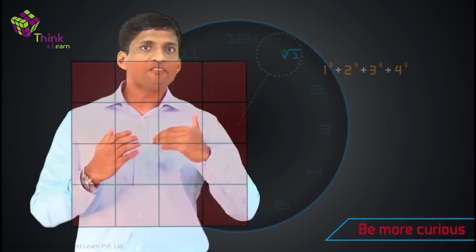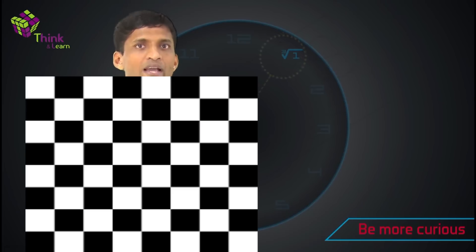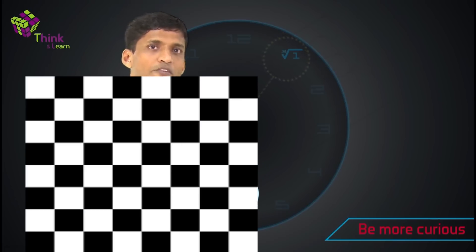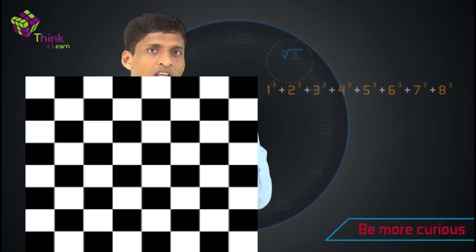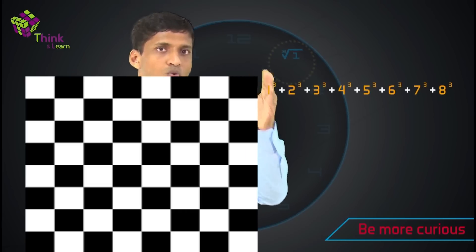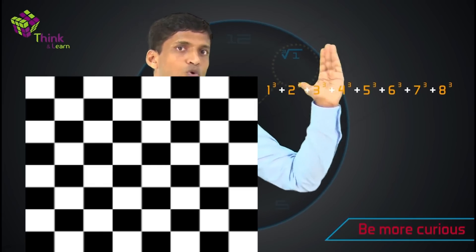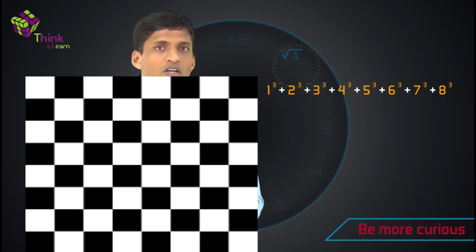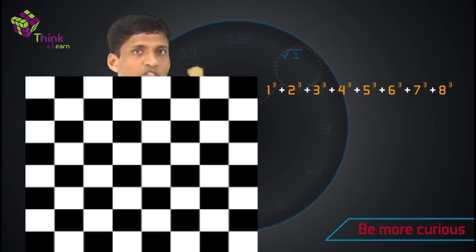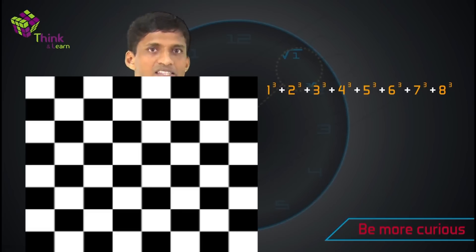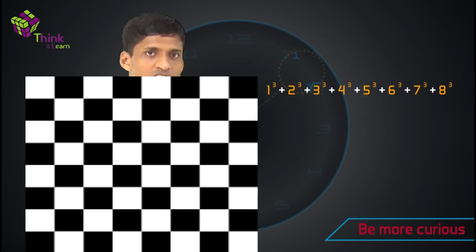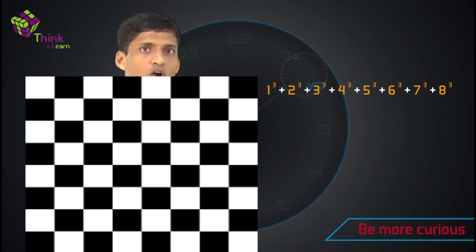For example, if I take a chess board which is an 8 by 8 grid, the total number of rectangles in a chess board will be 1 cube plus 2 cube plus 3 cube and so on up to 8 cube. So why these two are exactly the same — I will help you understand using the pattern which we discussed just now.